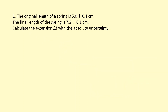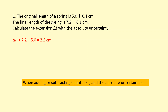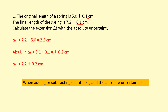The original length of a spring is 5.0 plus or minus 0.1 centimeters. The final length of the spring is 7.2 plus or minus 0.1 centimeters. Calculate the extension with the absolute uncertainty. To calculate the extension, we subtract them: final length minus the original length, which gives 2.2 centimeters. When you're adding or subtracting quantities with uncertainty in them, all you do is add the absolute uncertainties. So 0.1 plus 0.1 gives us an absolute uncertainty in the extension of plus or minus 0.2.